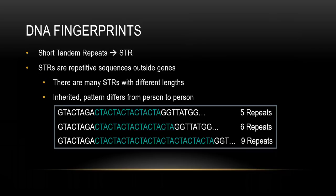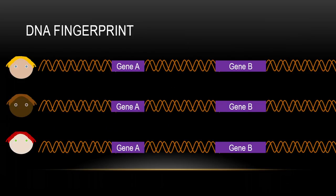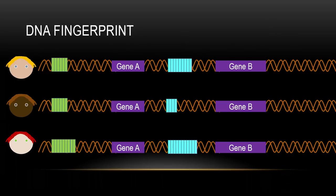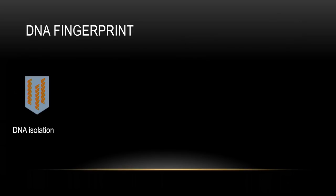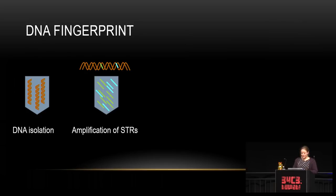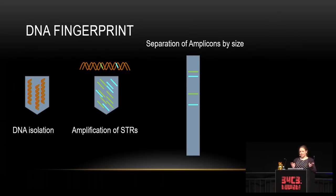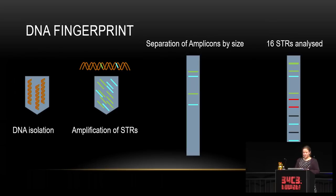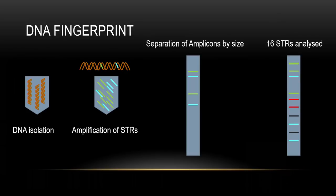Zum Beispiel wird eine Sequenz wie CTA fünf, sechs oder neunmal wiederholt. Die Anzahl der Wiederholungen ist das, was sich unterscheidet. Man zählt diese Wiederholungen – jede Box ist eine Wiederholung. Um einen Fingerabdruck zu bekommen, wird die DNA von einem Tatort isoliert, dann amplifiziert und getrennt. Die verschiedene Anzahl von Wiederholungen sorgt für unterschiedliche Signale. Mit 16 solcher STR-Loci bekommt man ein Profil, das man vielleicht aus Fernsehserien kennt.